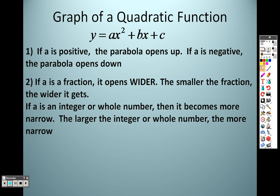If a is a fraction, it opens wider. So what that means is if it was one-half out in front, maybe a half x-squared, maybe an eighth x-squared, that means it's going to be a wider parabola. If a is an integer or a whole number, then it becomes more narrow. So the bigger that integer, as in the absolute value, is in the distance from zero. So if you had a 10x-squared or a negative 10x-squared, it would be a sharper, thinner parabola.